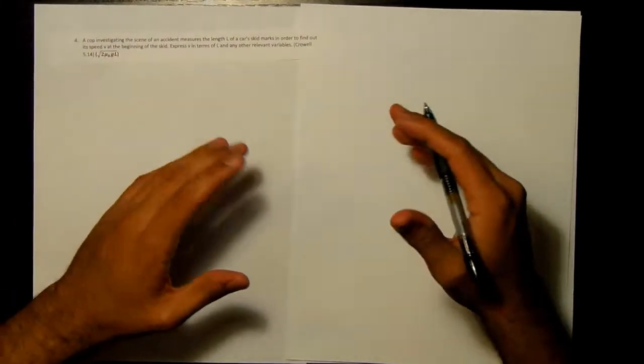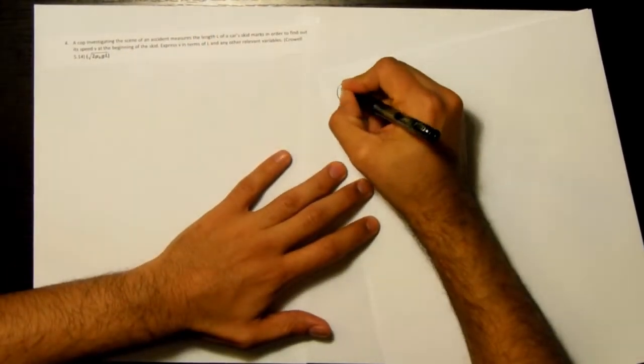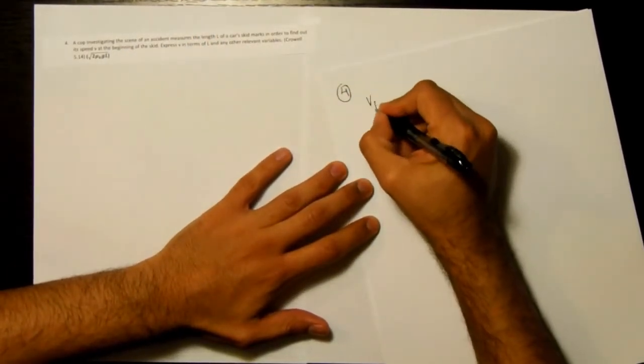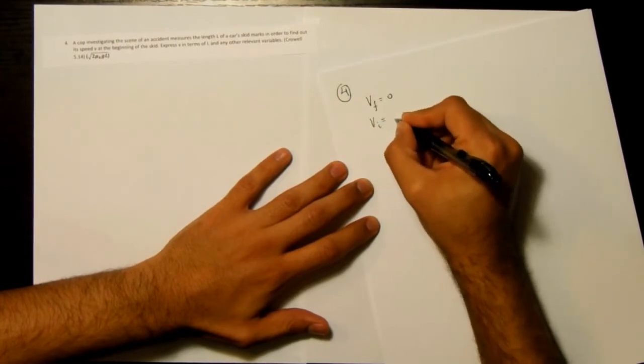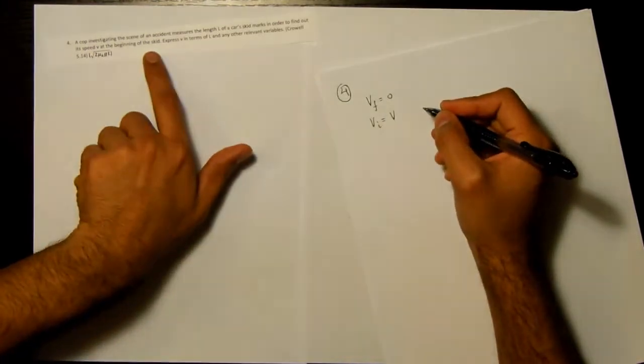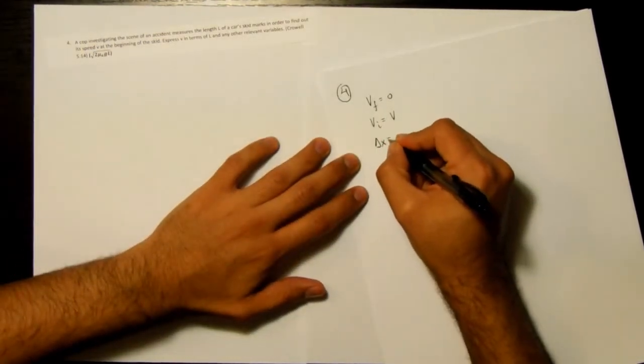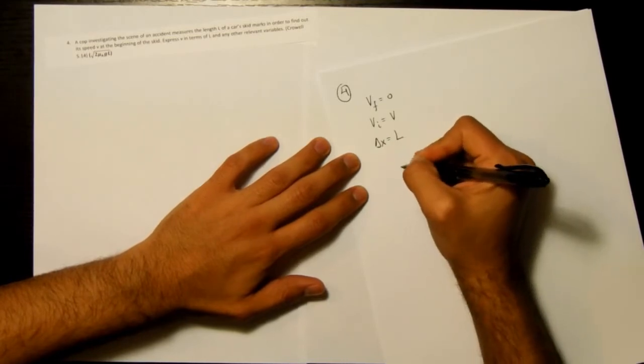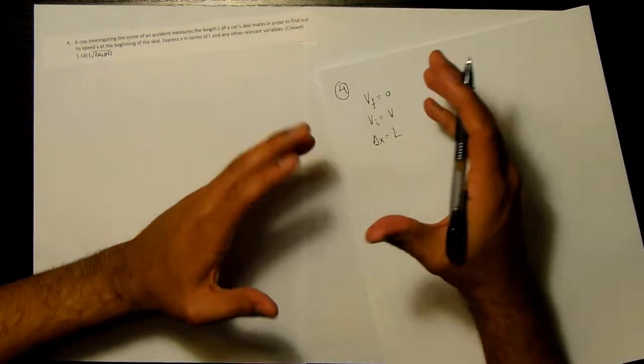So this is starting to look like a kinematics problem where we know that our final velocity is going to be zero. Our initial velocity, well, that's going to be V. That's what we're looking for. We know that the change in distance is L.